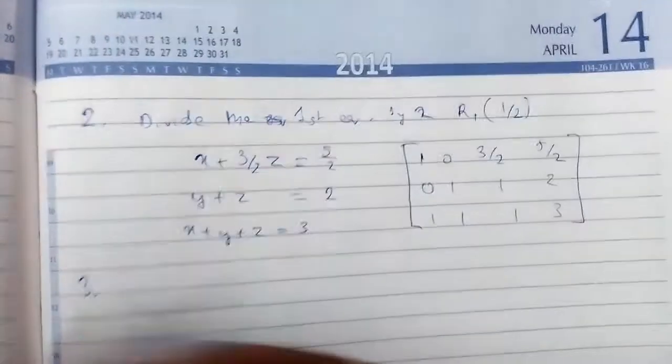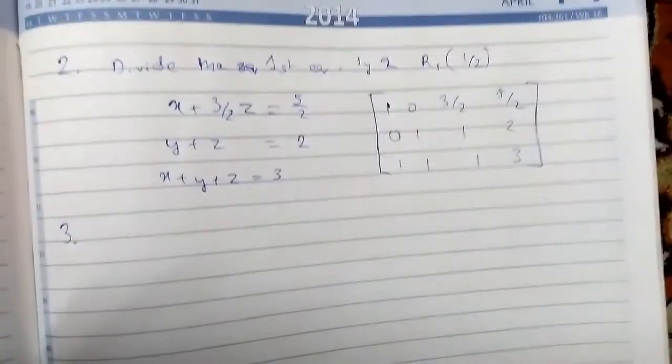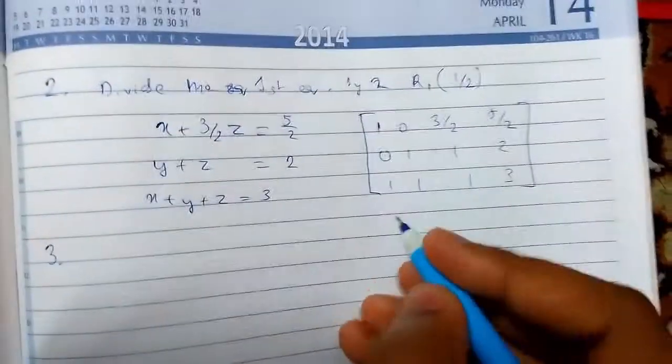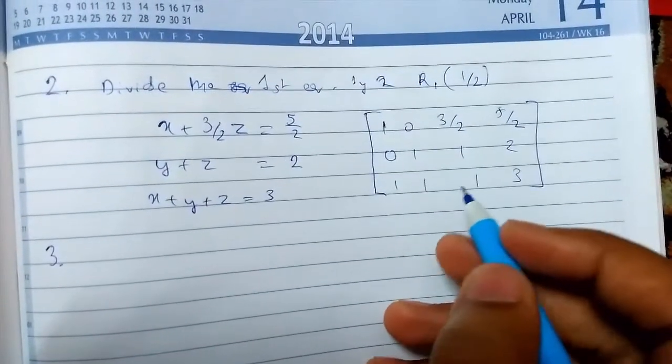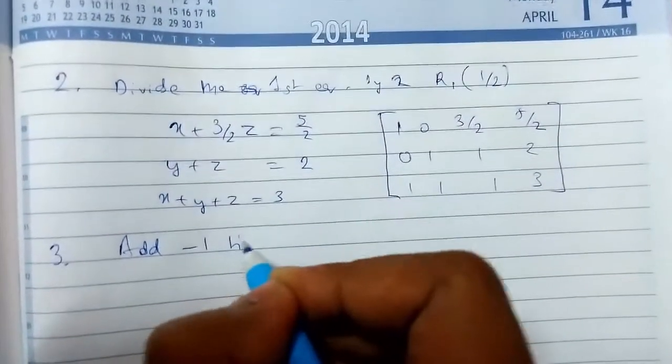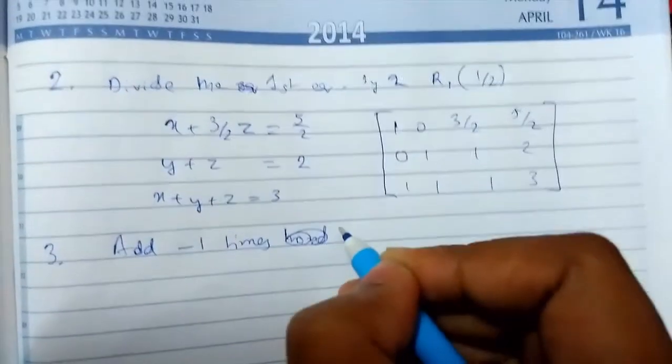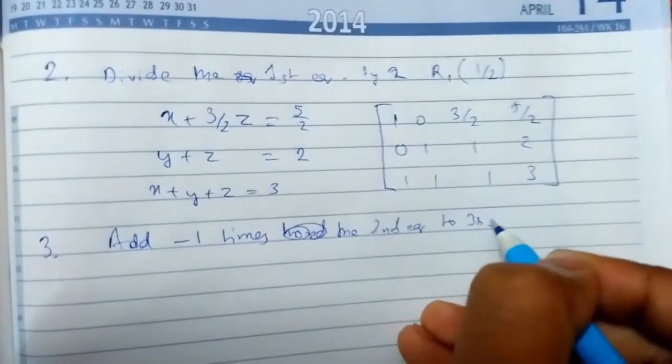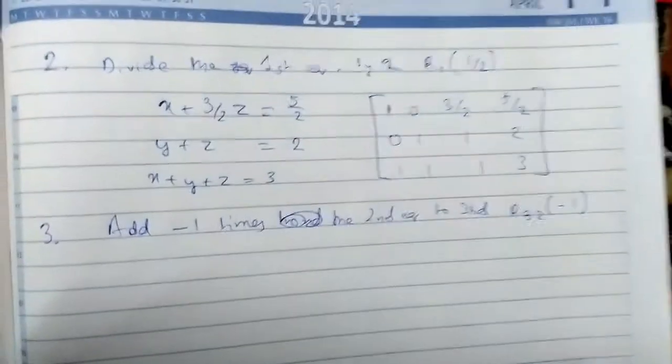So step 3 or process number 3 - what we can do is we can add minus 1 to it. So row 3 - add minus 1 times the second equation to third one. So R₃ - R₁. This is the symbolic representation.